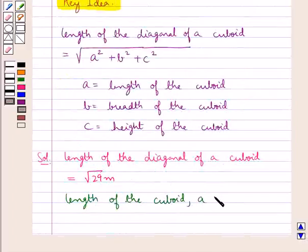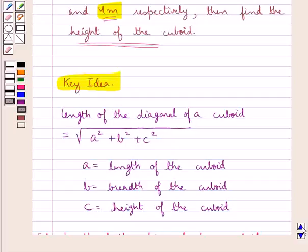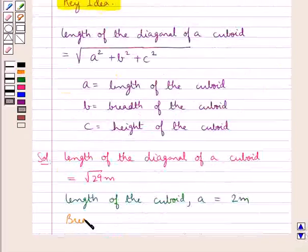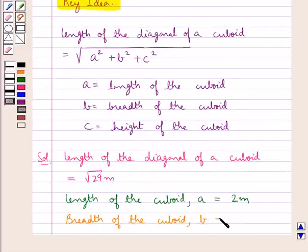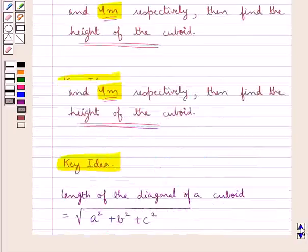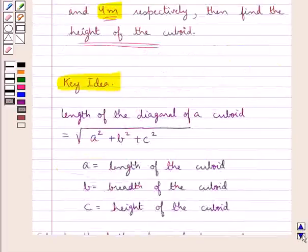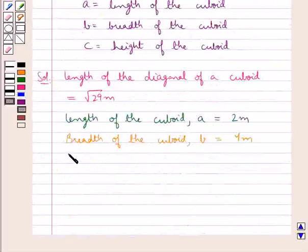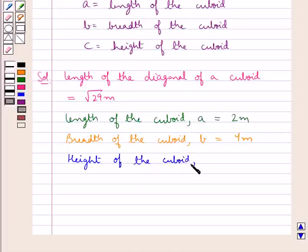The length of the cuboid A is equal to 2 meters, and the breadth of the cuboid B is equal to 4 meters. We need to find the height of the cuboid, say C.